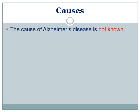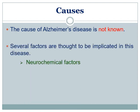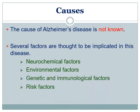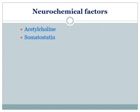Now, coming to the causes of Alzheimer's disease — the exact cause is still not known. However, several factors are thought to be responsible for the generation and progression of the disease. These factors are classified as neurochemical factors, environmental factors, genetic and immunological factors, and other risk factors. Neurochemical factors involve changes in the level of neurotransmitters such as acetylcholine, norepinephrine, somatostatin, and substance P.